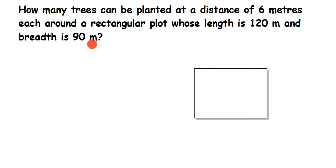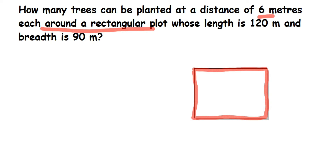What is given in the question: we have to plant a tree at a distance of 6 meters, and we have to plant around the rectangular plot — meaning on the perimeter of the rectangle. Between each tree there will be a gap of 6 meters. Suppose we plant one tree here, the next tree will be after 6 meters, like that around this boundary. The question is asking how many trees we have to plant at a distance of 6 meters.